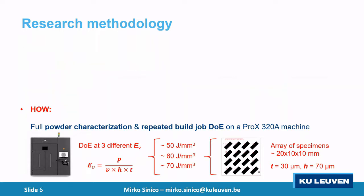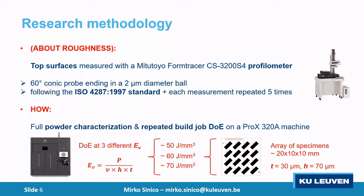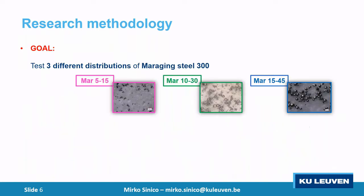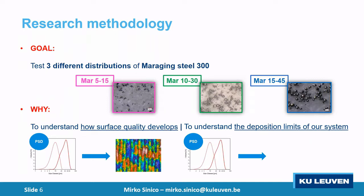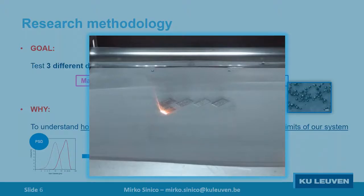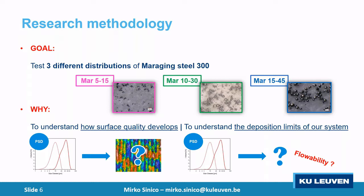We start with linear profilometry — standard profilometry following ISO standard. We know this is not the best way to characterize surface AM properties, but it was the instrument we had access to initially. We also analyze the process limits of our system — checking whether all three powders can be spread by our recoating system, or if we encounter flowability issues or agglomeration that prevent powder deposition.